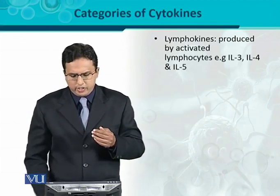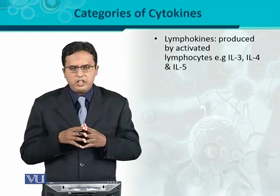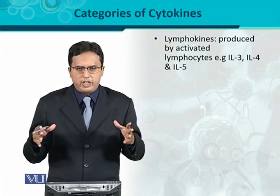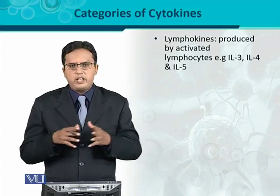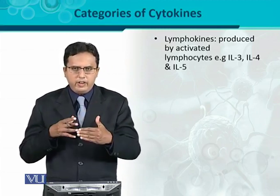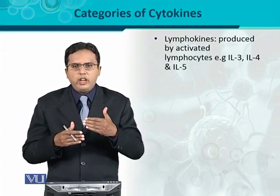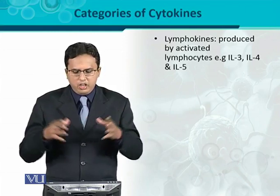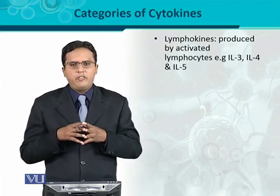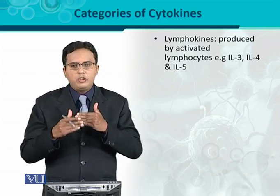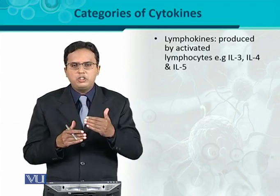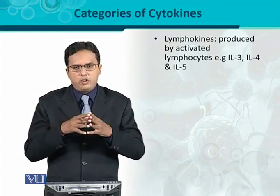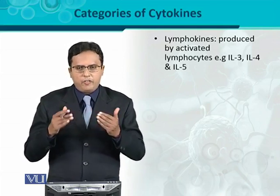The second type based on the origin of cells is lymphokines — these are produced from activated lymphocytes. Whenever T lymphocytes or B lymphocytes become activated, they create various cytokines. Examples include IL-3 (interleukin-3), interleukin-4, and interleukin-5. These are lymphokines.